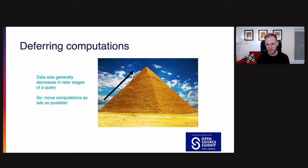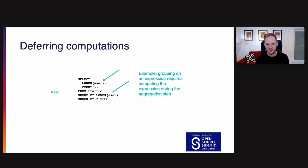Another important technique in level 0 is deferring computations. So the key insight here is the data size generally decreases in the later stages of the query. So imagine you're doing a query that does a filter followed by a group by. That filter is going to throw away some rows and that group by is going to generally reduce the size of the data set. The idea here is you want to move computations as late as possible. So here's an example. Let's say we're doing this query. So we're grouping by the lower case of a user. So take the user, convert this to lower case. And then we're counting the number of records for that user from a traffic table. And then we're ordering by the count descending. So this is the top users by number of hits in a traffic table. So in this case, we're grouping by lower of user and selecting lower of user. So we're grouping on an expression, which requires computing the expression during the aggregation step. This example took six seconds to run.